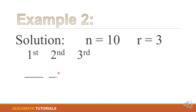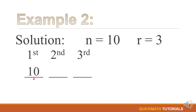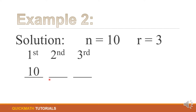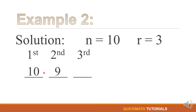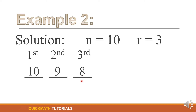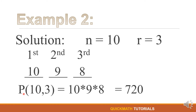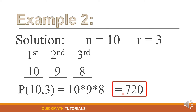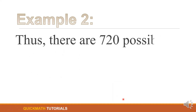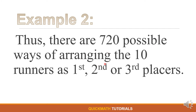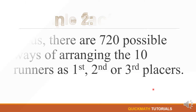Since r is equal to 3, we will have three blanks. For the first blank, how many choices of runners could win first place? Yes, we have 10. For the second blank, suppose one runner has already won first place, how many choices are left for second place? Yes, we have 9. For the third blank, suppose there is already a winner for first and second place, so how many choices do we have for third? We have 8. Multiplying them, the permutation of 10 runners taken three at a time is equal to 10 times 9 times 8, which is equal to 720.